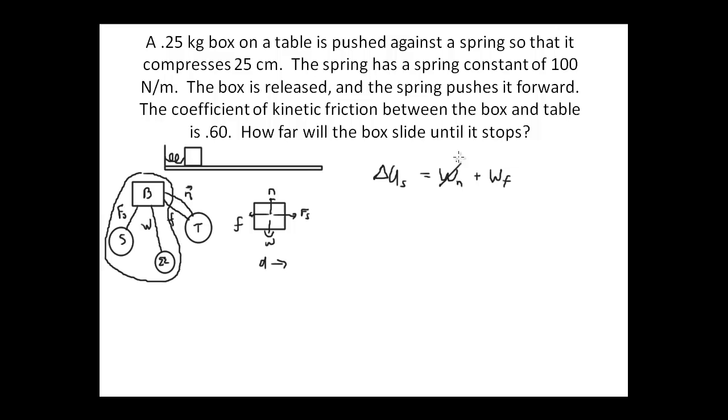But based on our free body diagram, the work from the normal force is zero, but there will be work from the friction force. So our equation is simply: any change in the potential energy due to the spring will be equal to the work done by friction.